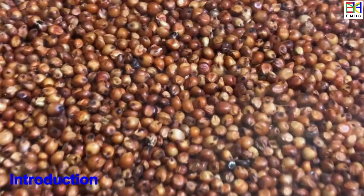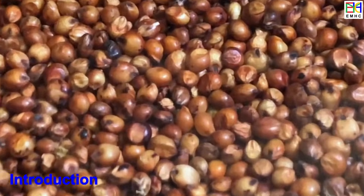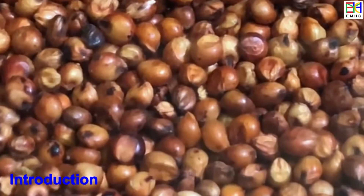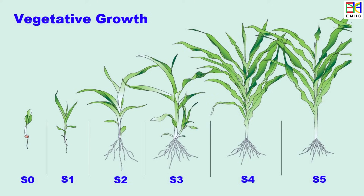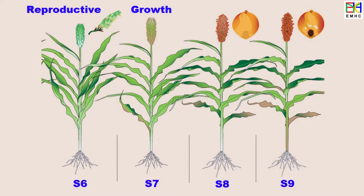The life cycle of sorghum can be divided into two growth stage categories. Stages 0 to 5 are for vegetative growth, which includes emergence, 3-leaf, 5-leaf, growing point differentiation, flag leaf visible, and boot. Stages 6 to 9 are for reproductive growth, which includes flowering, soft dough, hard dough, and maturity.